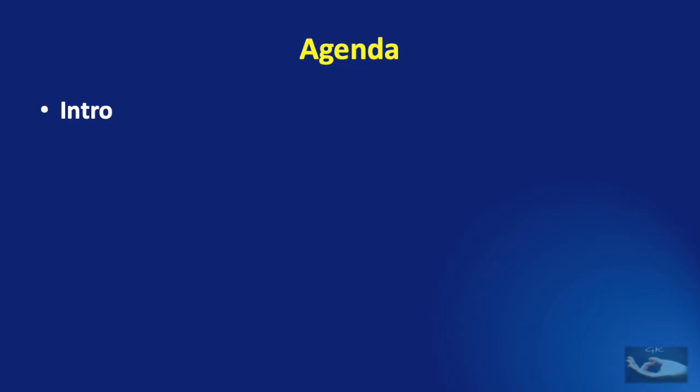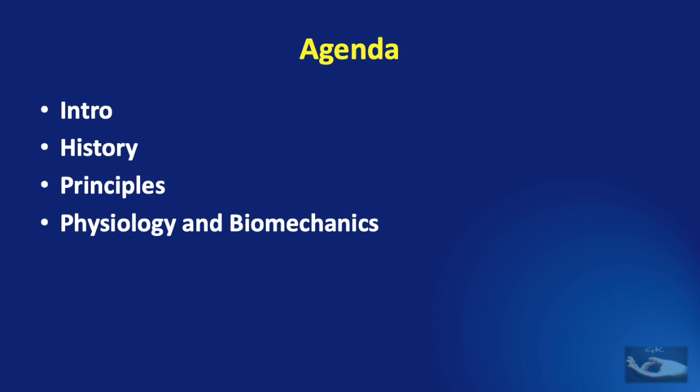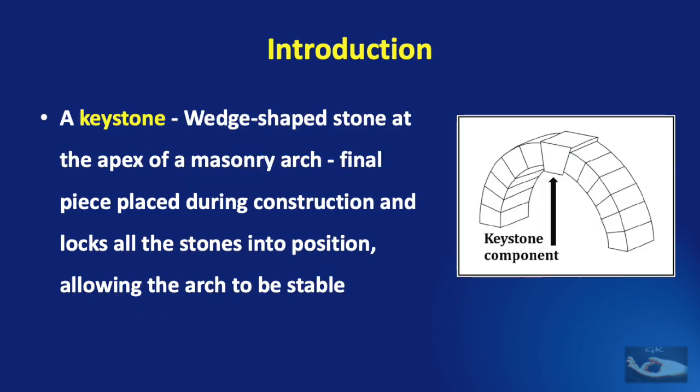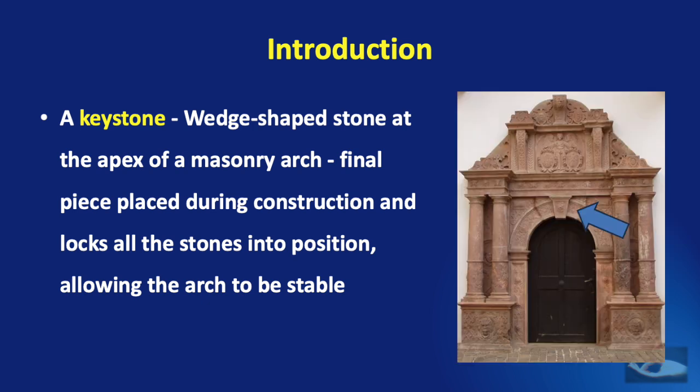We shall learn about this flap first with an introduction, then a brief history, the principles underlying this flap, the physiology and biomechanics, and the classification and applications of the Keystone Perforator Flap. A keystone is a wedge-shaped stone at the apex of a masonry arch. It is the final piece placed during construction and locks all the stones into position, allowing the arch to be stable.